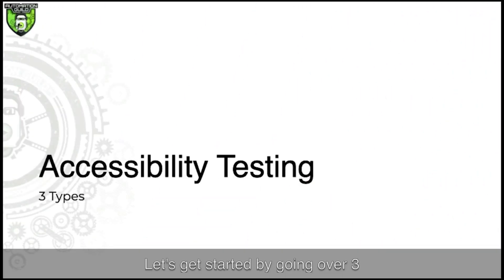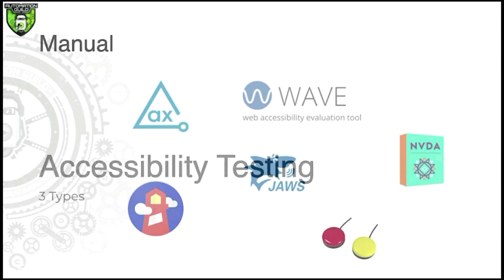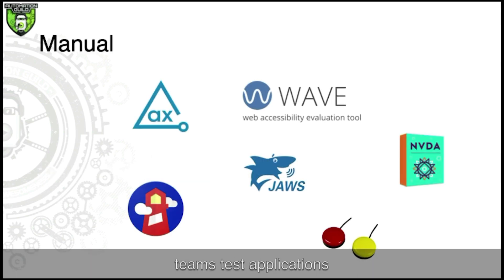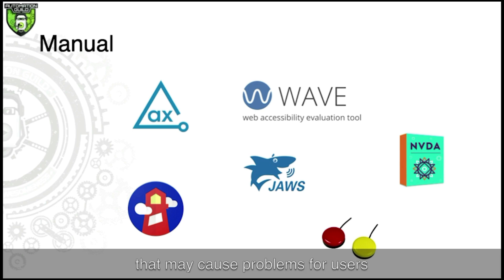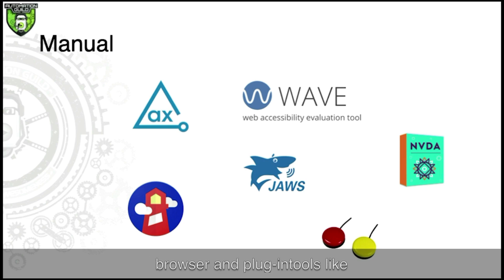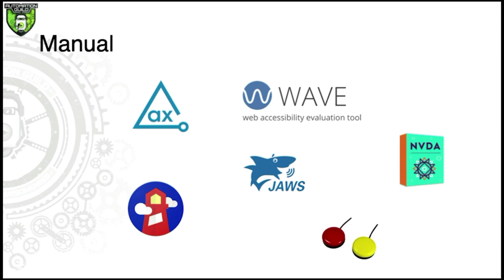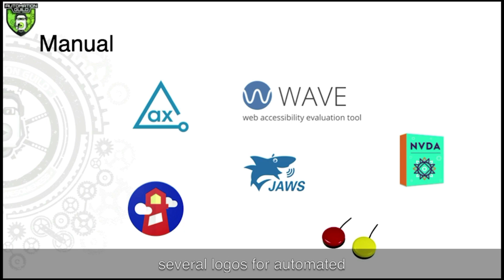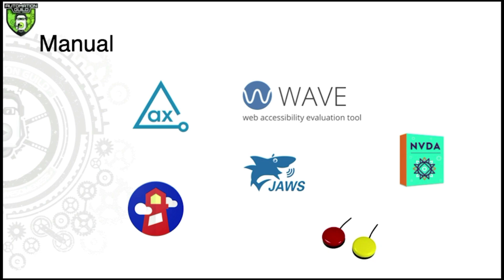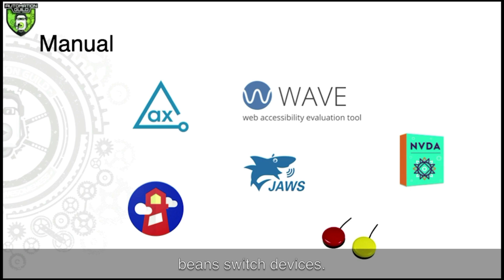Let's get started by going over three types of accessibility testing. Manual accessibility testing is when teams test applications manually for accessibility issues that may cause problems for users with disabilities. This testing is conducted using browser and plug-in tools like Wave, Lighthouse, or Axe, as well as assistive technology like screen readers and switches. On screen I have logos for those automated tools and screen readers like JAWS and NVDA, plus an image of two Jelly Bean Switch devices.